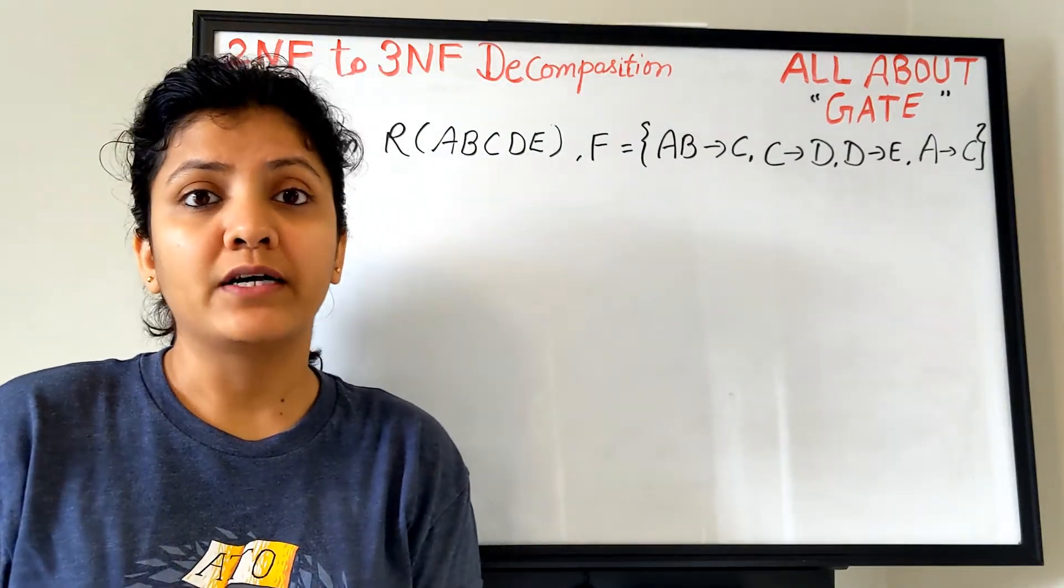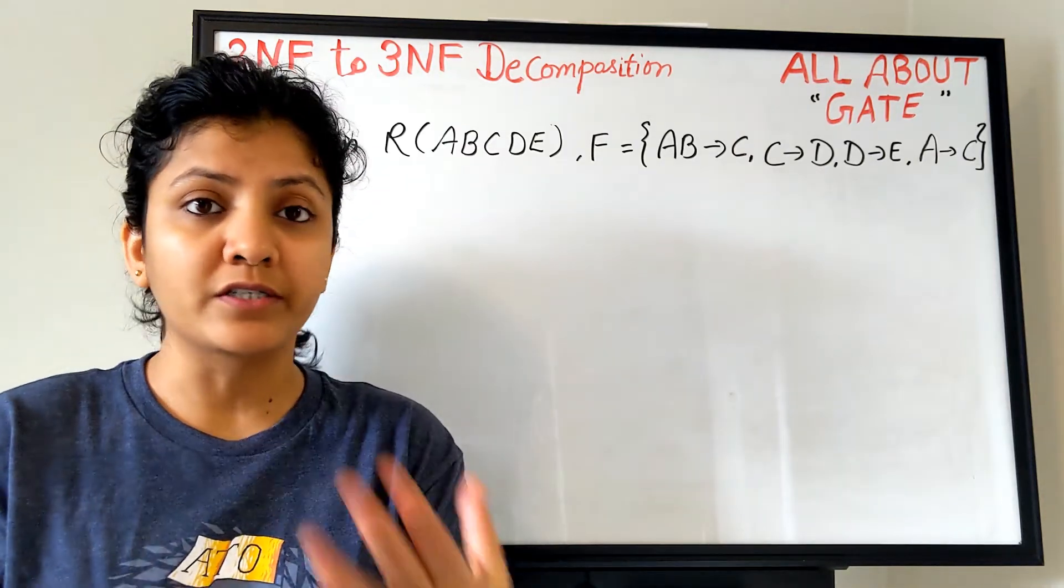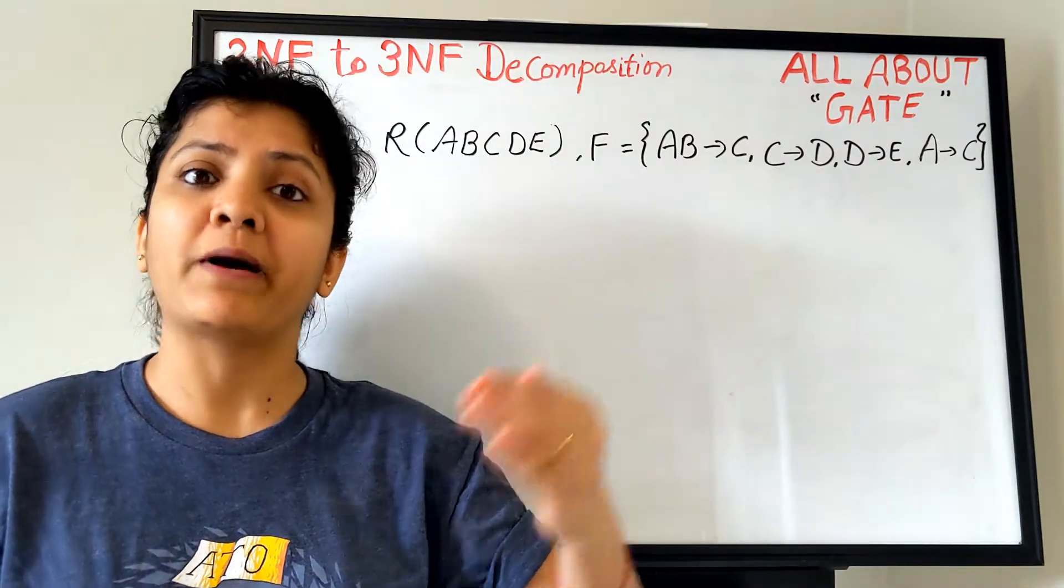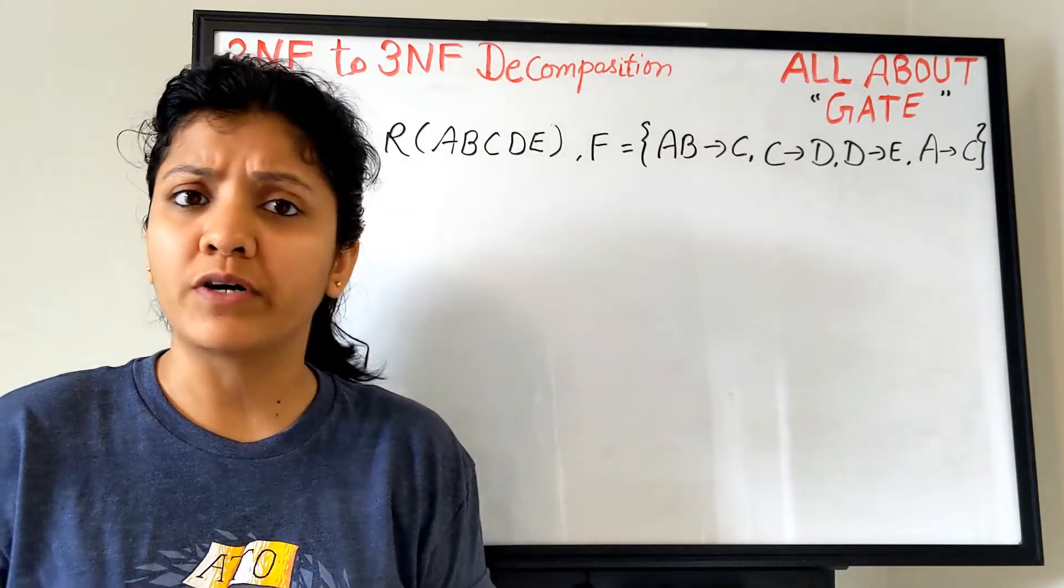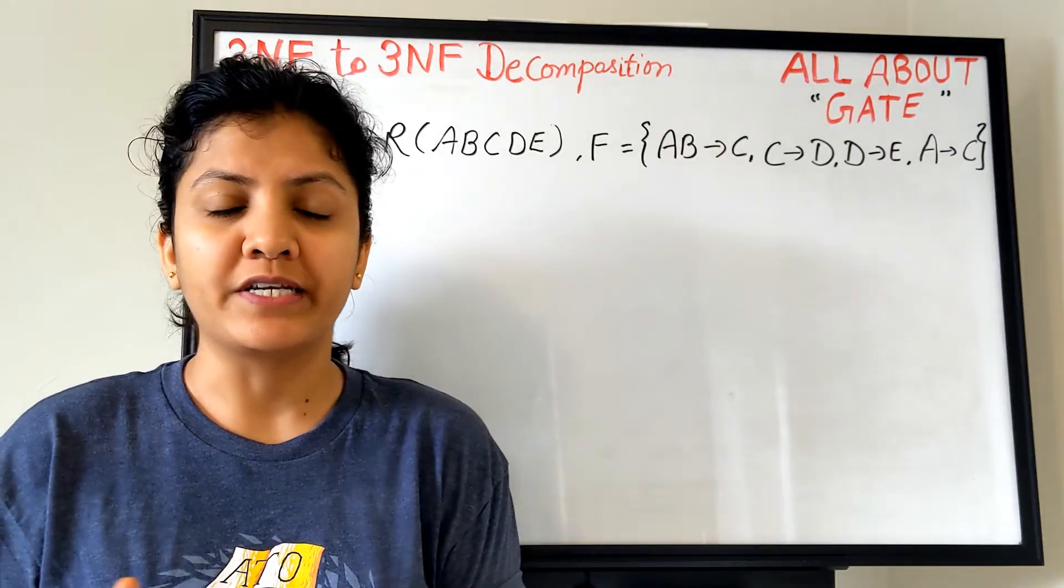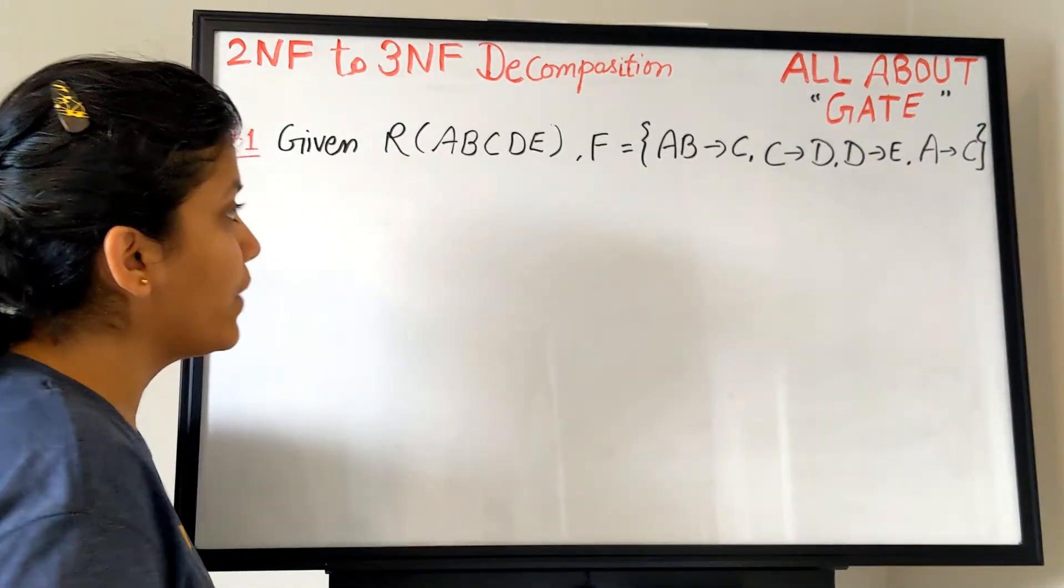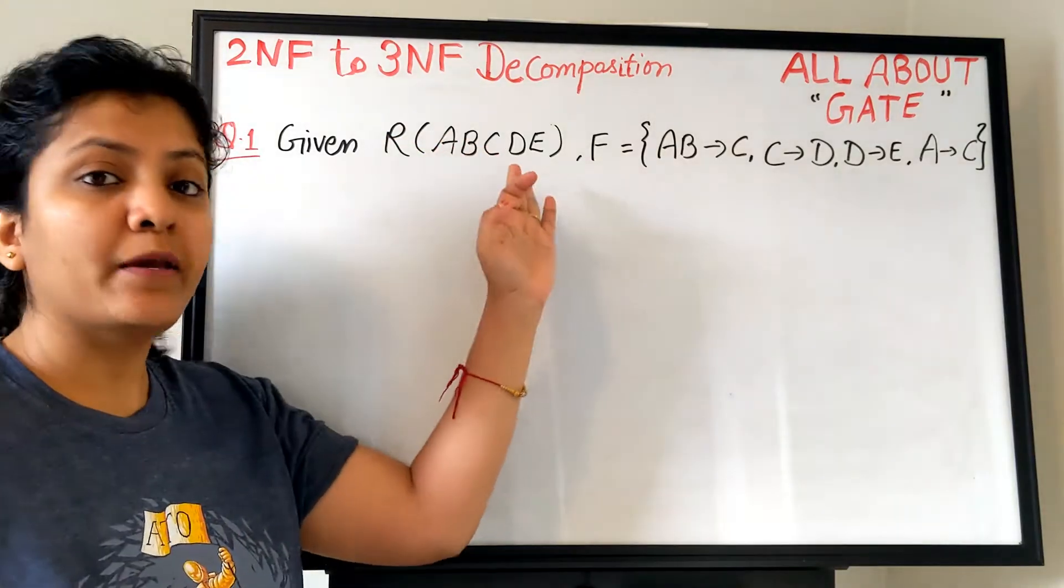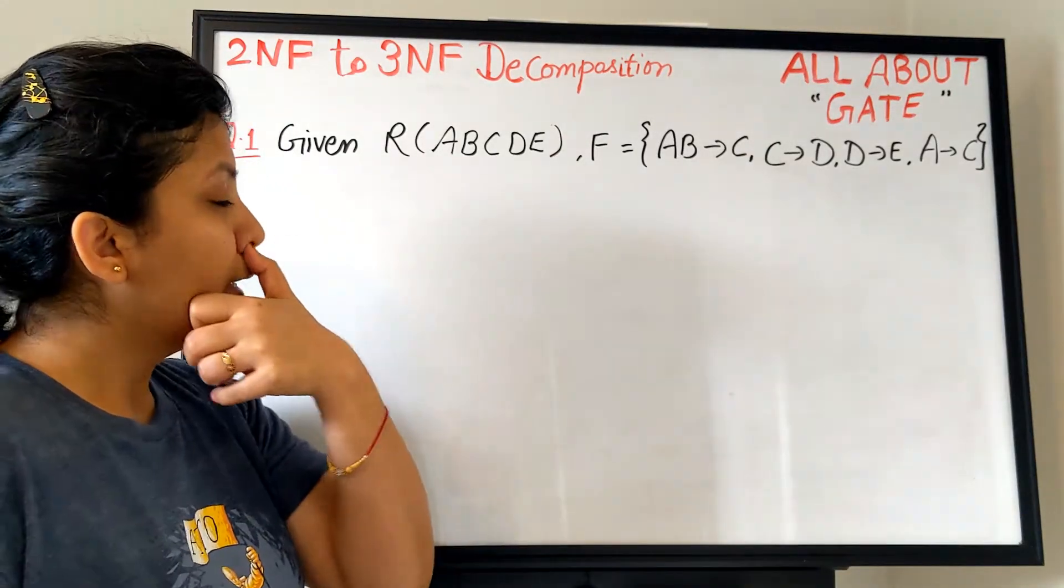To start with, we will see a decomposition done up to the normal form of third normal form. That is the highest normal form that we will try to achieve by the decomposition is a third normal form. The given relation could be already in the one normal form or second normal form, it doesn't really make much difference. For that matter, I have taken the direct example right here in front of you. The question says that we are given a relation R with the five attributes A, B, C, D, E and these are the given functional dependencies.